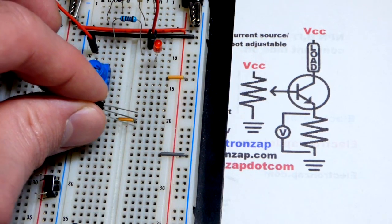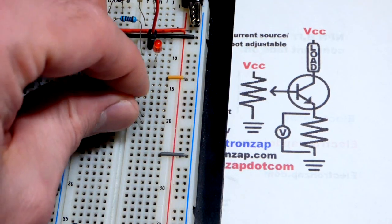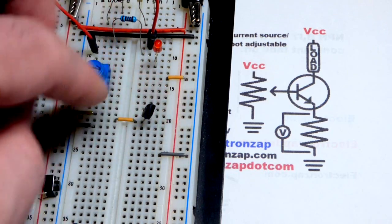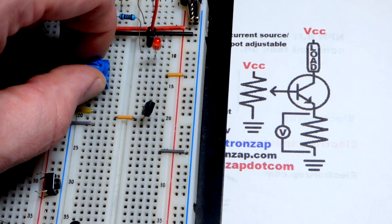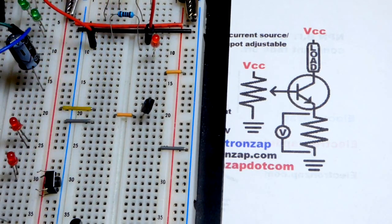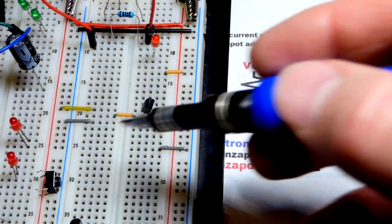I'm going to put the middle pin, the base, right to that jumper there. So that jumper, I'm going to put the trim pot. You can see I already have jumpers to the positive and the negative rail. Negative rail is ground.